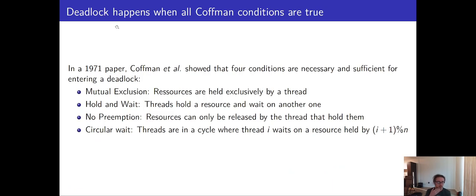So deadlock has been shown to only happen if four conditions are true. And these are the Coffman conditions based on the author of the paper that demonstrated this. So these four conditions. One, mutual exclusion. Some resources are held exclusively by a thread. Our locks, for example. We're holding the locks. The locks are held by that thread and only that thread.